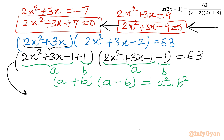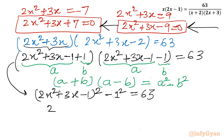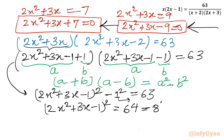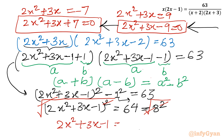Applying the difference of two squares: the equation becomes (2x squared plus 3x minus 1) squared minus 1 squared equal to 63, so (2x squared plus 3x minus 1) squared minus 1 equal to 63. Moving 1 to the right gives (2x squared plus 3x minus 1) squared equal to 64, which is 8 squared. Taking the square root of both sides: 2x squared plus 3x minus 1 equal to plus or minus 8.